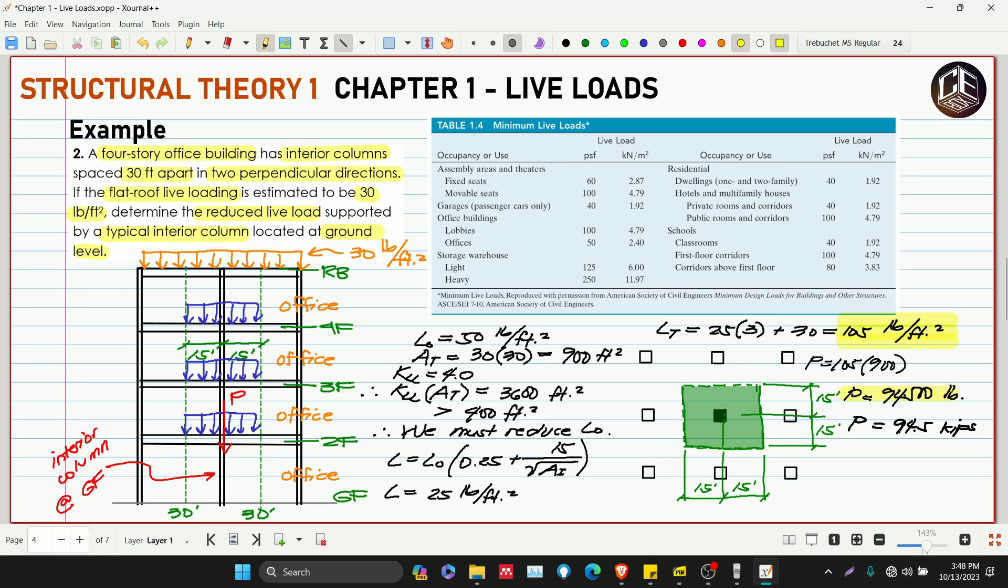Either of these two you can use, depending on what your professor requires. That's how simple it is to solve reduced live load when multiple levels are involved in the problem. Don't forget this Table 1.4 provided by R.C. Hibler for minimum live loads. But if your professor uses NSCP 2015, then you need to print those pages because there are many. Maybe your professor wants you to be familiar with different types of loadings included in NSCP 2015—that's fine, actually better. But this is just for the purpose of knowing how to reduce loads and how to distribute them according to different levels of the building. This is our example number two for Chapter 1, Live Loads of Structural Theory 1.